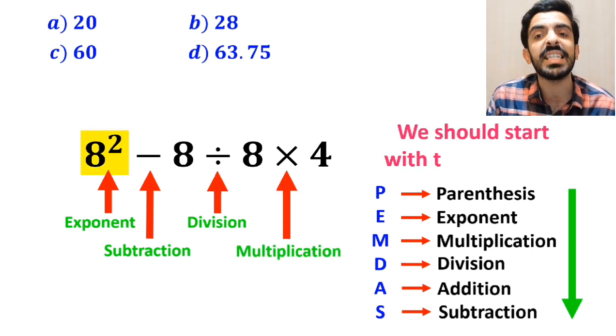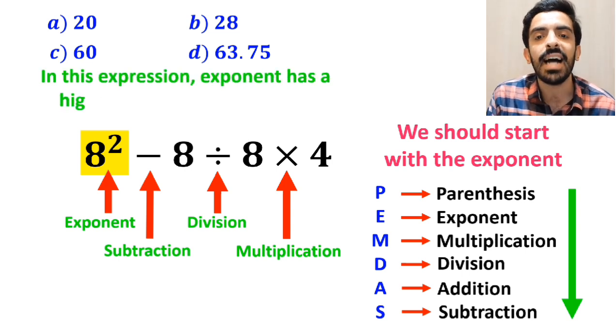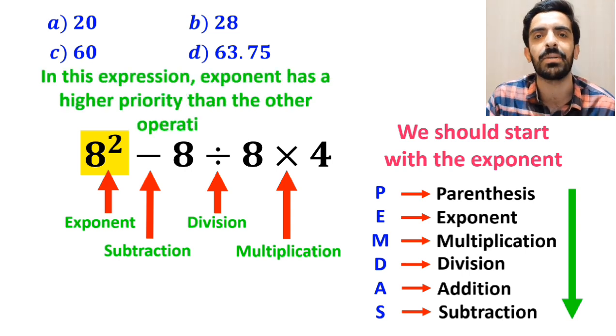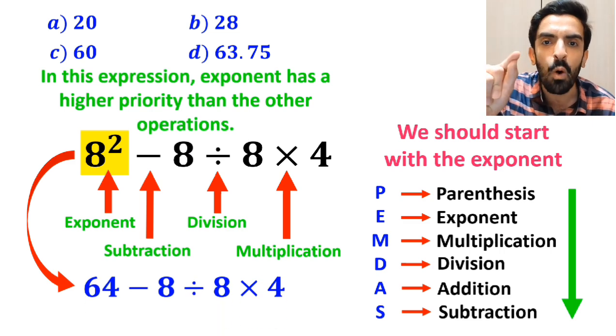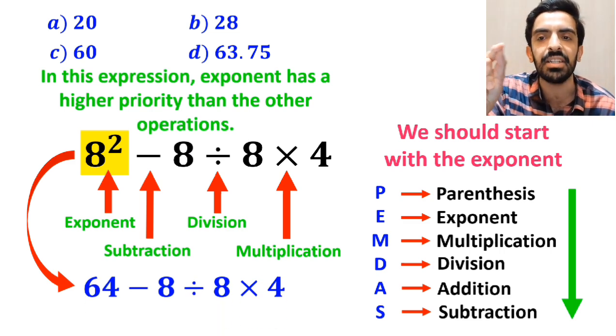We should start with the exponent, because in this expression, exponent has a higher priority than the other operations. So, this expression simplifies to 64 minus 8 divided by 8 then times 4.